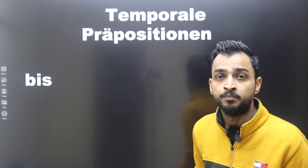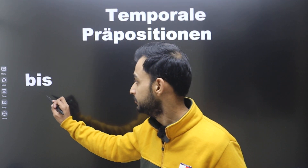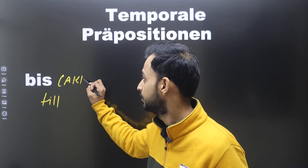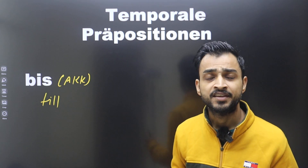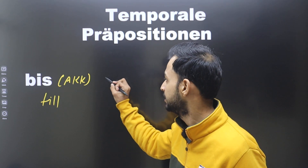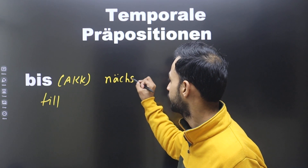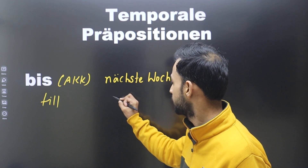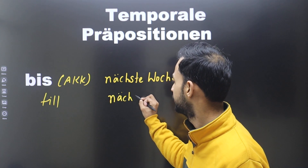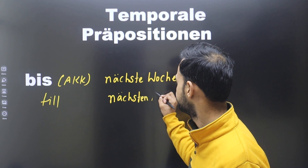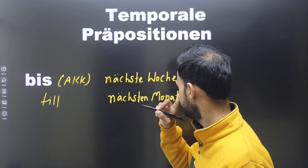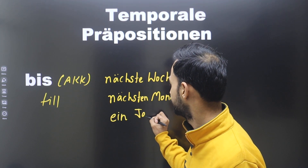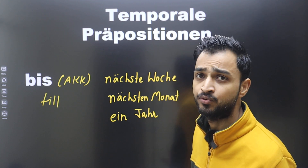The second preposition is 'bis,' which is accusative and means 'till' or 'until.' For example: 'bis nächste Woche' (till next week), 'bis nächsten Monat' (till next month), 'bis ein Jahr' (till one year). This is an accusative preposition.